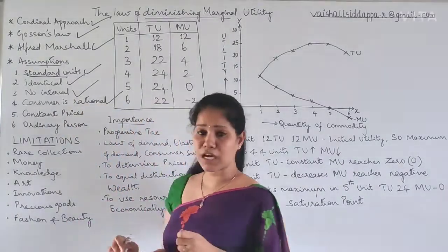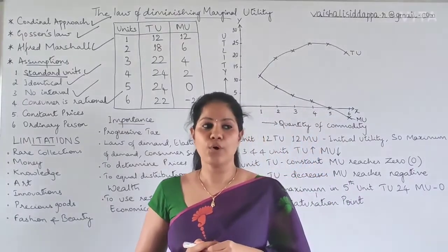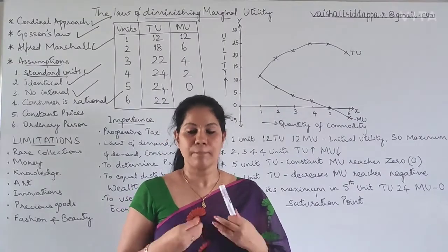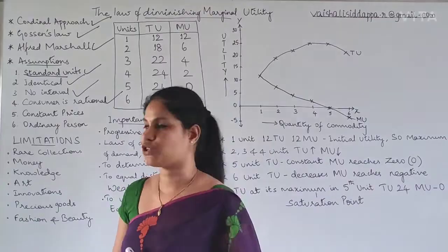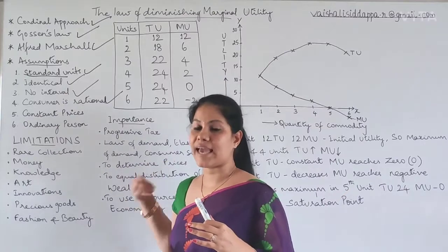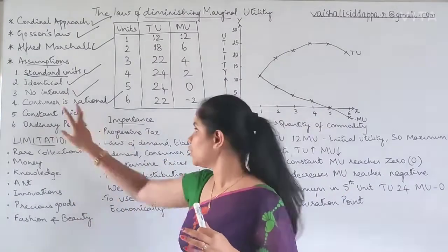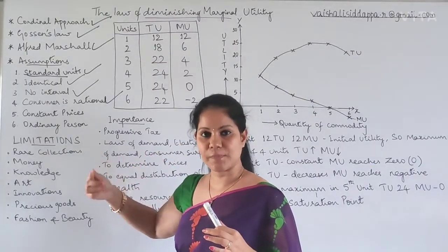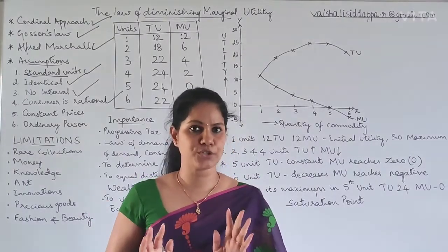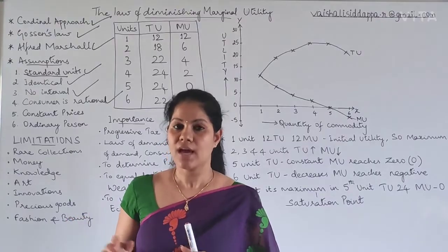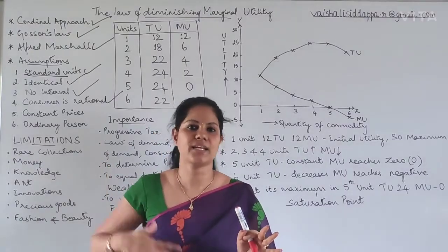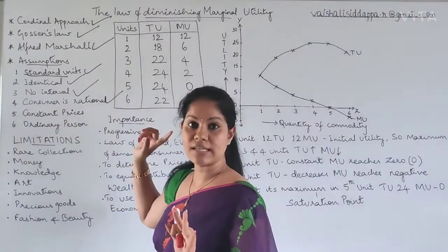Fourth assumption: the consumer is a rational consumer. Every consumer is rational because they always try to get maximum satisfaction. Being a consumer, we always expect maximum satisfaction. After having one apple, we are not going to stop — one apple is not going to satisfy us. We will keep eating until we feel it is enough.